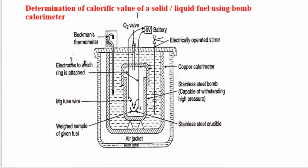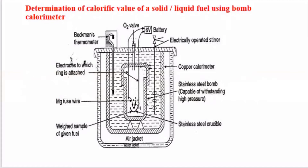Determination of calorific value of solid or liquid fuel using a bomb calorimeter. A bomb calorimeter is an instrument used for finding the calorific value of solid or liquid fuel. Its construction: it contains a stainless steel crucible in which the solid or liquid fuel sample is kept. This crucible is placed in a steel bomb, which is kept inside a well-insulated copper calorimeter containing water. There is a thermometer for measuring temperature, and an electrically operated stirrer to ensure uniform heat distribution. Oxygen is supplied through the oxygen valve, and magnesium wires connected to the fuel are connected to a battery for supplying electric current.